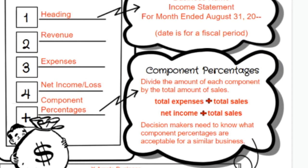For component percentages, you divide the amount of each component by the total amount of sales, which allows us to compare apples to apples. It lets us make comparisons between different periods of time and compare our business to similar businesses. We take total expenses divided by total sales, and net income divided by total sales, so decision makers can know what component percentages are acceptable and whether the business is doing better, worse, or the same compared to prior periods.